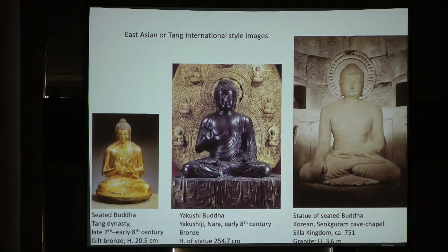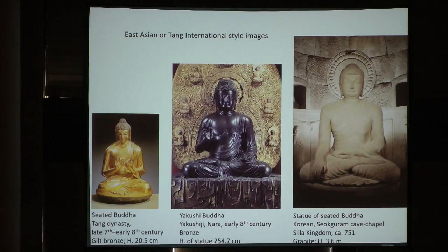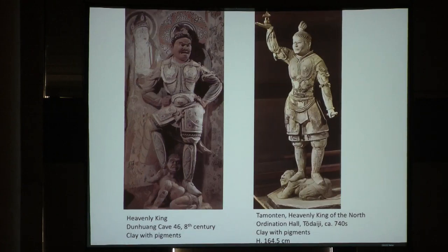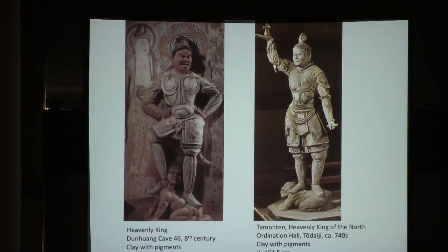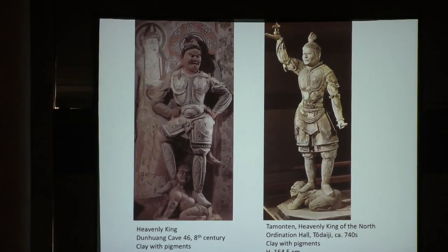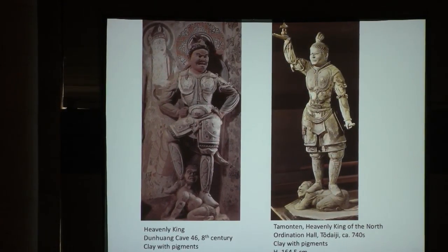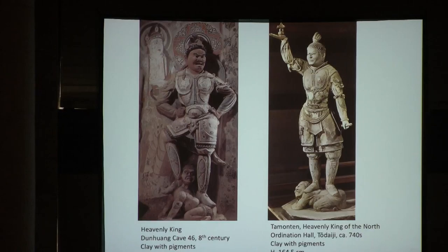Here are three Buddhist statues from China, Japan, and Korea. They are different materials and different sizes, and yet you can see the similarity in terms of proportions and general style, even though the hand gestures are quite different. Here we have two guardian figures. You can see the same degree of high realism that we associate with the so-called High Tang International Style, even though the one on the right actually comes from Japan.